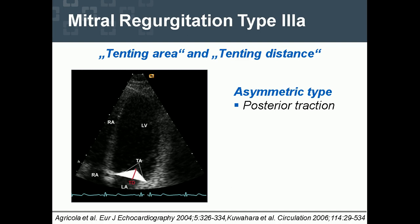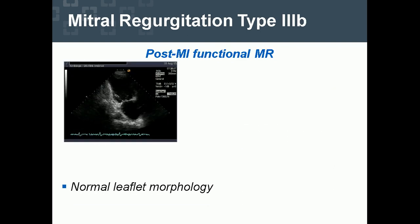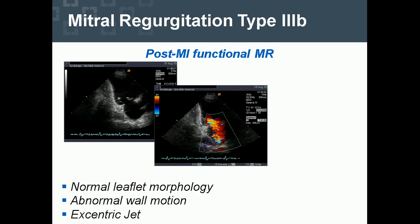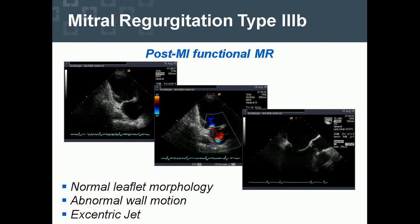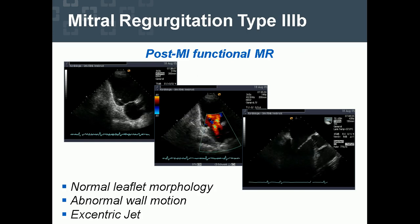There are two subtypes of type 3A mitral regurgitation. The asymmetric type is characterized by posterior traction and eccentric jet, and the symmetric type by apical traction resulting in a central jet. Type 3B — functional MR due to ischemia and myocardial infarction — features normal leaflet morphology but abnormal wall motion, and an eccentric jet is typical. This can be seen in the two-chamber transthoracic echo view and in the transoesophageal view, where the restricted posterior leaflet motion is clearly limited and changed.